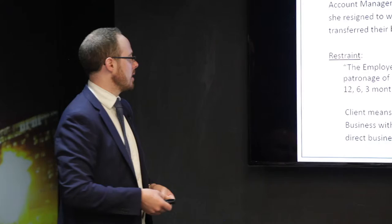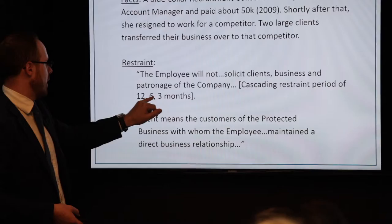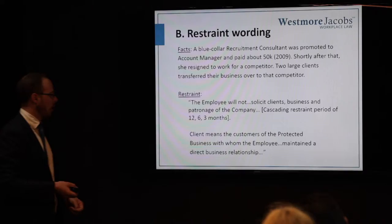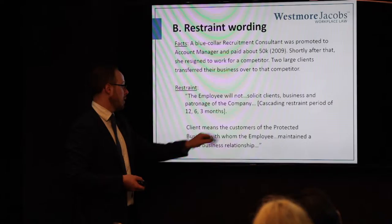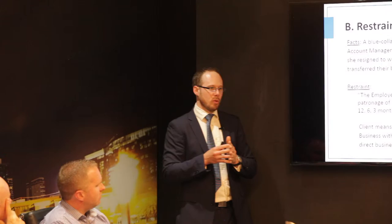Here's the restraint wording: 'The employee will not solicit clients' business and patronage of the company.' They had a cascading clause saying you're not allowed to solicit for 12, 6, and 3 months. There was a definition of client: 'clients means the customers of the protected business with whom the employee maintained a direct business relationship.' So it's not clients with whom the employee had no contact — it includes clients with whom she had some direct business relationship.